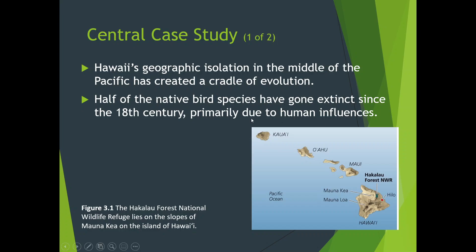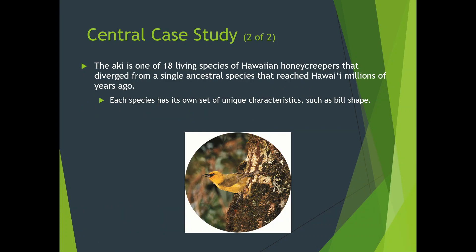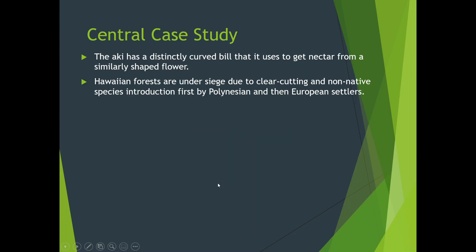A lot of times extinctions are caused by human influences. In some cases we brought in, or influenced the ability for tree snakes to get onto the islands and eat all the birds. So it wasn't directly our fault, but we're the ones that let the snakes on the islands. The Hawaiian honeycreeper — one of 18 living species in that genus — diverged from a single ancestral species that reached Hawaii millions of years ago, without any human involvement. Each species has its own unique characteristics, such as bill shape, which determines its ecological niche.